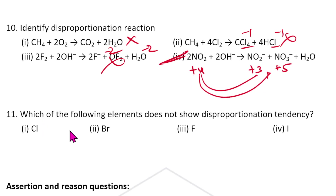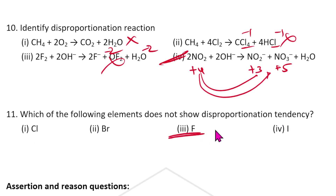Eleventh question: Which of the following elements does not show disproportionation tendency? Remember, fluorine — because fluorine has only the −1 oxidation state (besides 0), it cannot disproportionate. So you can easily tell the answer is fluorine.